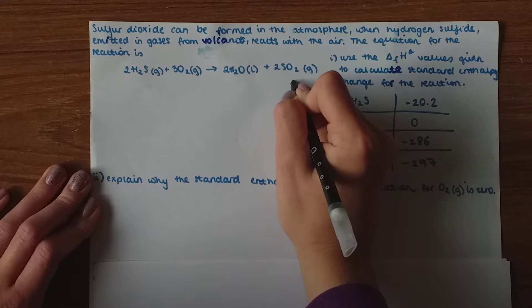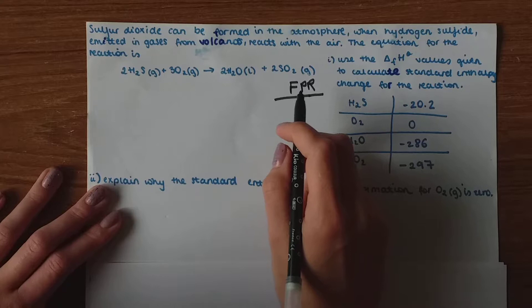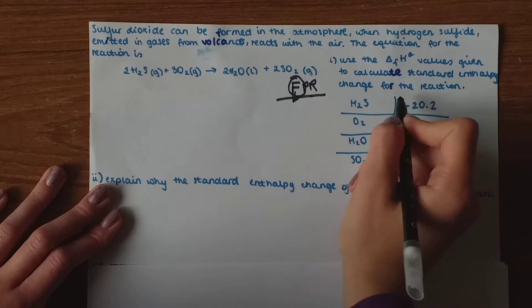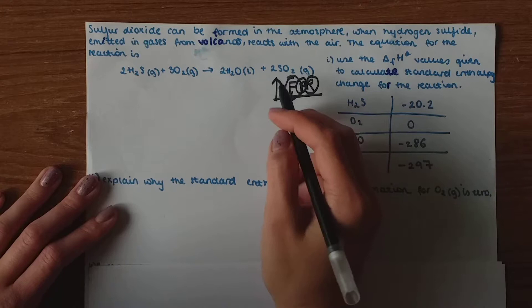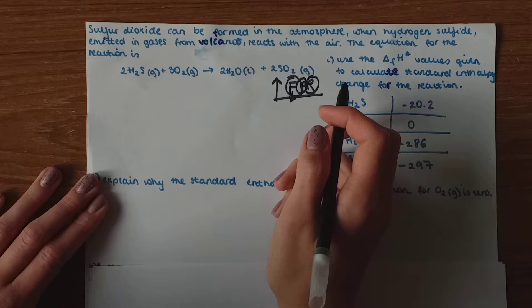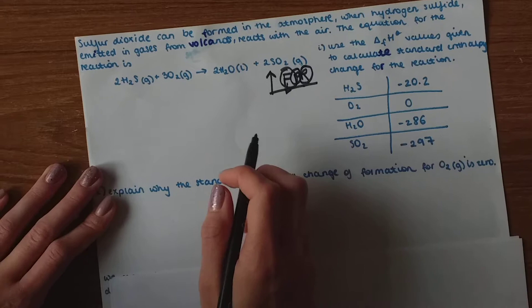So we're going to use FPR and what I mean by FPR is formation values products minus reactants and the arrow goes up. If you don't understand what I mean by FPR please visit my blog page and the tutorial for enthalpy changes in Hess's law.